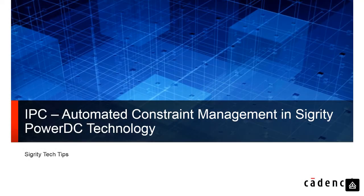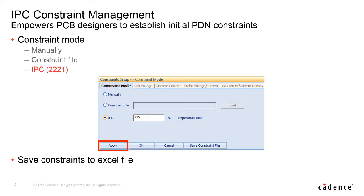Today we're going to look at a demo of IPC-based automated constraint management configuration with Sigridy PowerDC technology. There are three ways to set up DC constraints in PowerDC: you could manually enter constraints, automatically generate constraints using IPC standards, or you could reuse constraints from before that you've saved as an Excel spreadsheet.